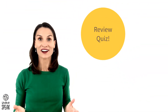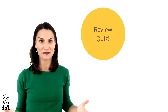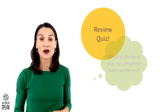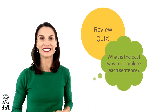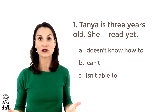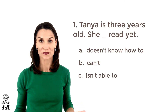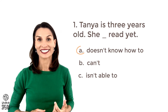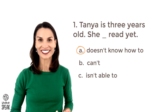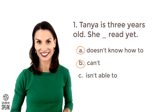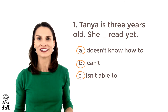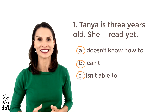Now that we've looked at all of the modals for ability in present and past, let's take a little quiz. What is the best way to complete each sentence? Number one: Tanya is three years old. She doesn't know how to read yet. She can't read yet. Or she isn't able to read yet. All three of these are good ways to complete this sentence.